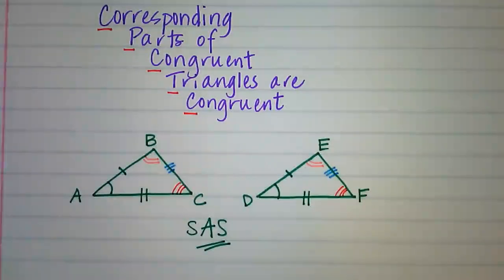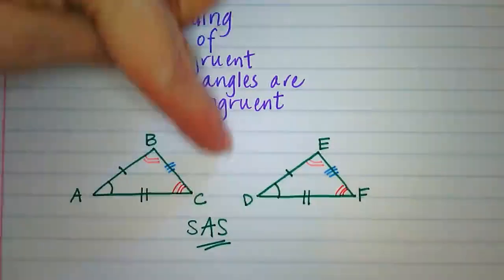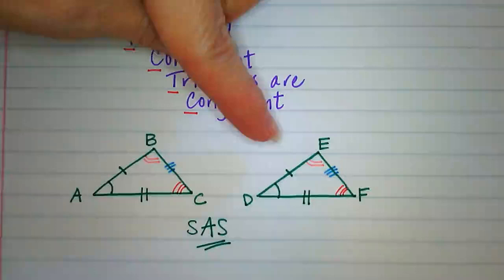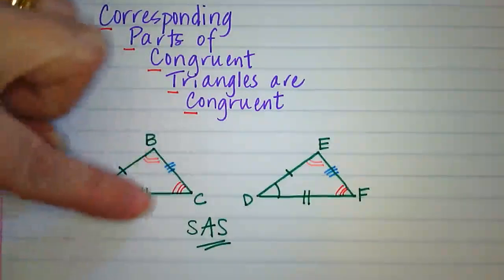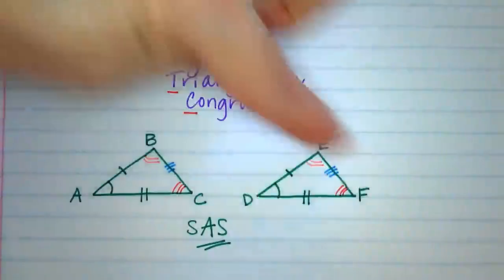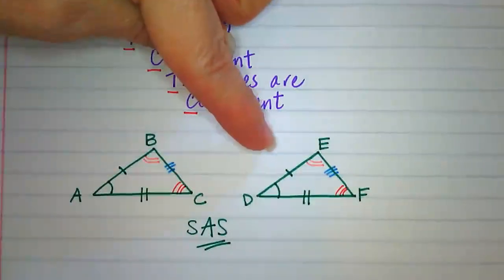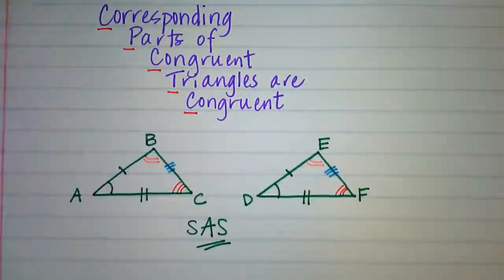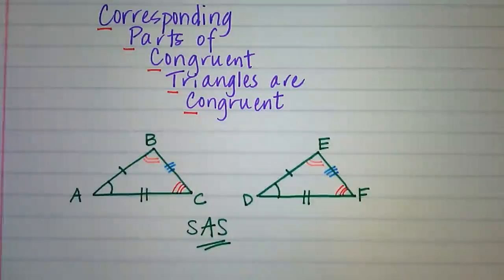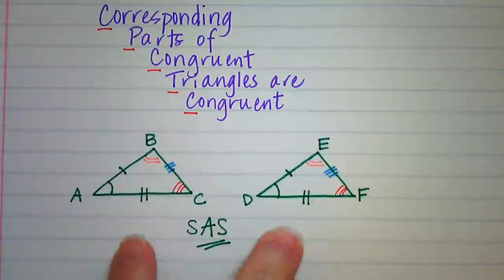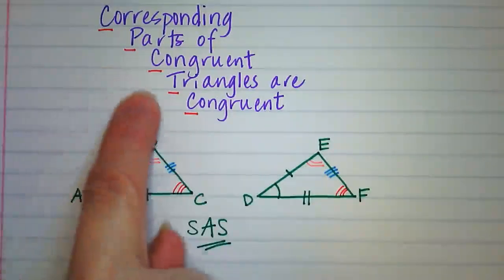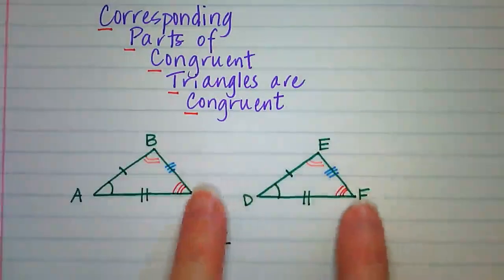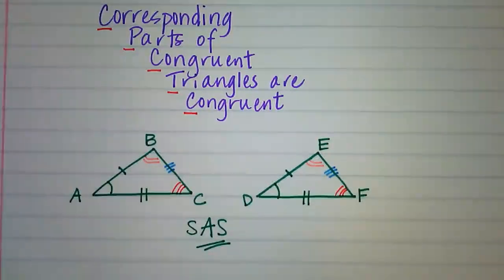In order for triangles to be congruent, all three sides of one triangle must be congruent to the corresponding three sides of the other triangle, and the three angles of one triangle must be congruent to their corresponding three angles in the other. We can use side-angle-side, angle-angle-side, angle-side-angle, side-side-side, or hypotenuse-leg to prove triangles congruent, and then CPCTC lets us conclude that the other parts are also congruent.